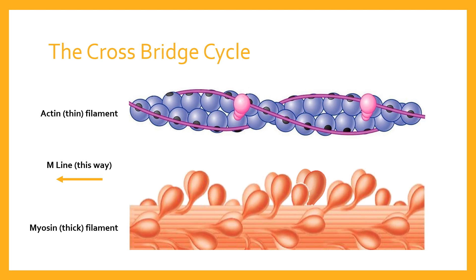The actin filament has on top of it or around it two other key proteins: tropomyosin and troponin. Tropomyosin winds along the length of the filament, and troponin appears at various points along it. Troponin is attached to tropomyosin so that when troponin moves — and I'll explain how in just a moment — it also moves tropomyosin as well.